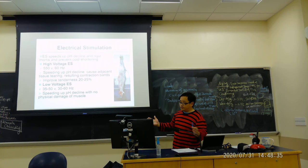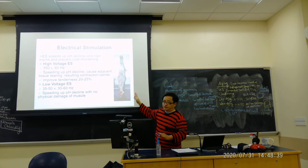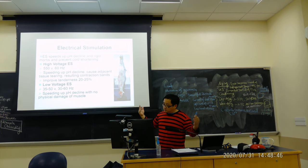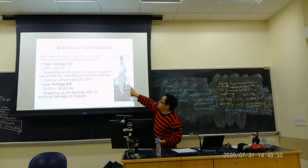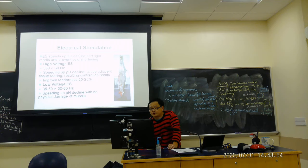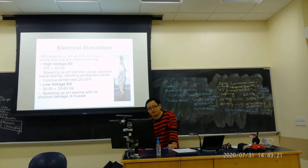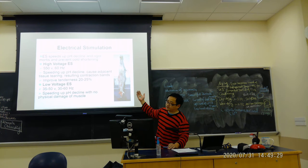Now let's talk about electric stimulation. Why do we do electric stimulation? This is different from electric stunning — electric stunning is used on the live animal. Electric stimulation is applied after the carcass is finished, to speed up pH decline, cause adjacent tissue tearing and contraction bands, and prevent cold shortening. There are two voltage levels: high voltage around 550V improves tenderness 20–25%, while low voltage at 35–50V gives only about 10% improvement.